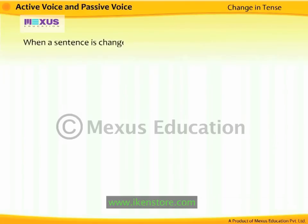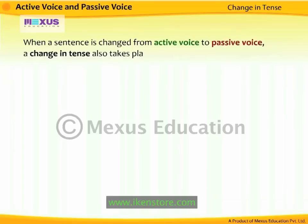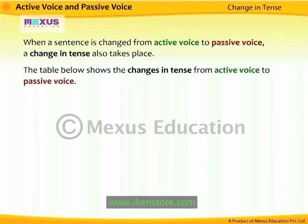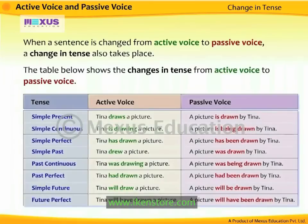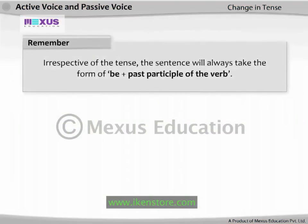When a sentence is changed from active voice to passive voice, a change in tense also takes place. The table below shows the changes in tense from active voice to passive voice. Remember that irrespective of the tense, the sentence will always take the form of 'be + past participle' of the verb.